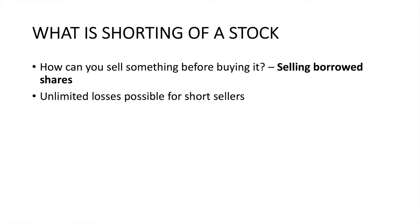The broker will ask for some margin to be kept so that at a later time, you have enough cash in your account to support that transaction. Now, I've borrowed 100 shares and sold them in the market — what is my possible profit potential? If I sold Apple at $100, the maximum profit is made if the share price goes down to zero, making $100 per share. On 100 shares, that's $10,000.